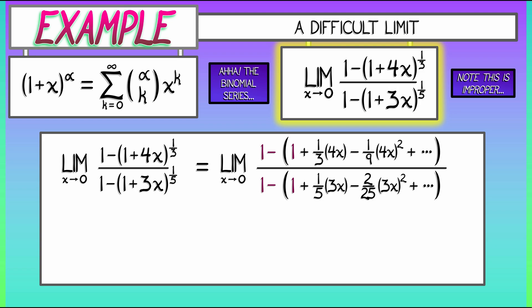And what's left over is a set of terms, all of which have x's in them. So, in particular, we can factor out an x from the numerator, from the denominator, and what do we get?